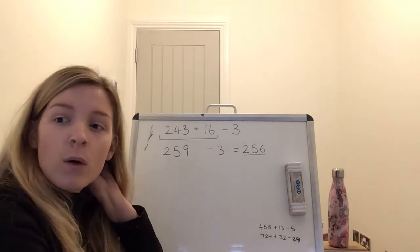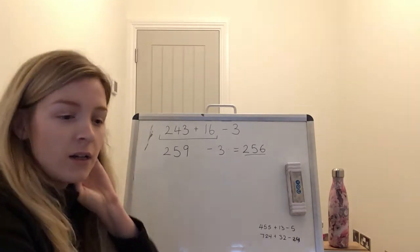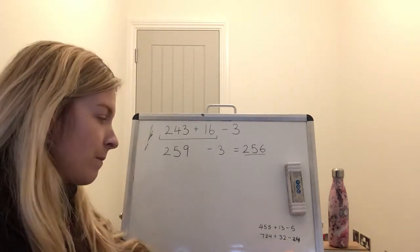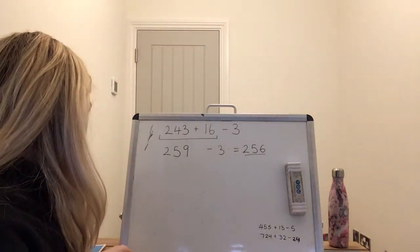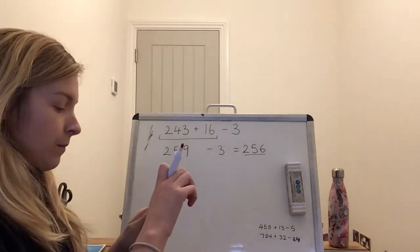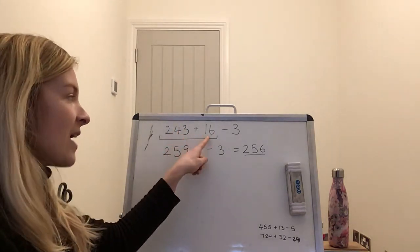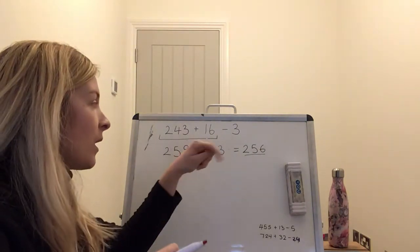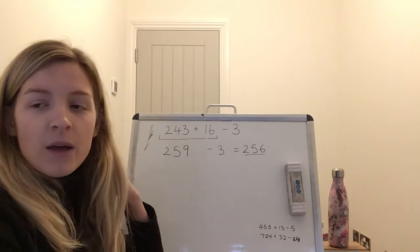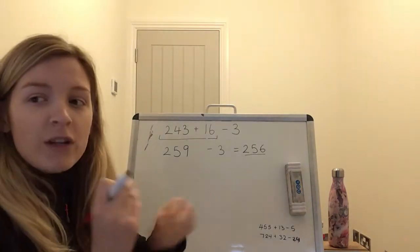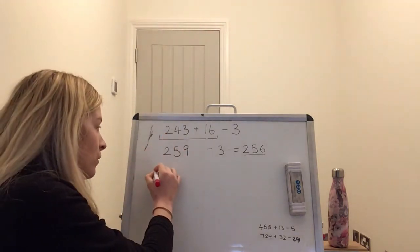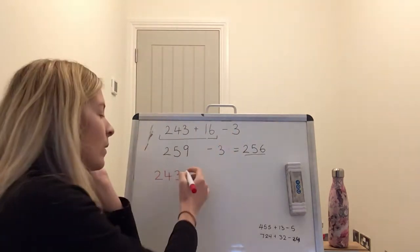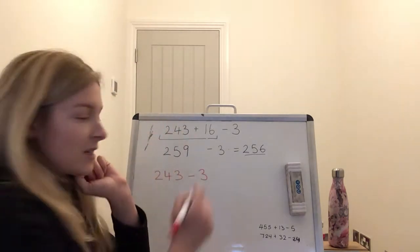Now, that's okay. That's one way of doing it. We've got the right answer. However, what if I told you there was a more efficient way of doing that? So, instead of adding the 16 first, why don't we take the 3 off first? Let's see if that makes things any easier. So we could rewrite this sum as 243, take away 3, add 16.